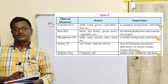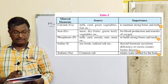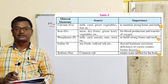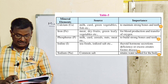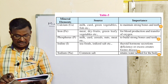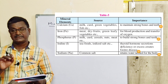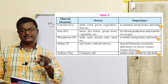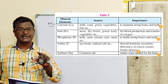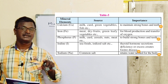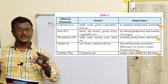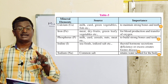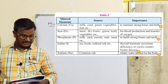Iodine sources: seafoods and iodized salts. Importance: secretion of thyroid hormone. Iodine is a very important mineral for the secretion of thyroid hormone. In the presence of iodine, thyroid hormone is secreted. Deficiency of thyroid hormone causes goiter disease.